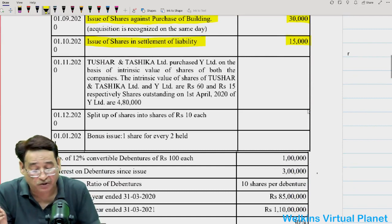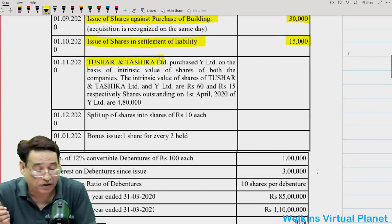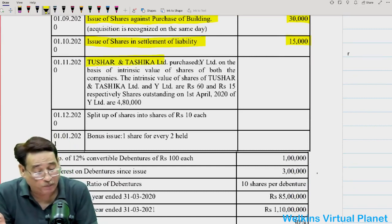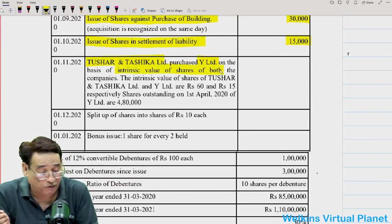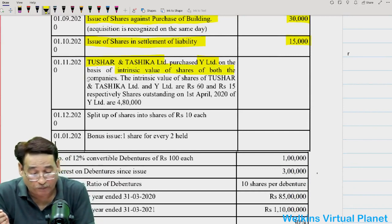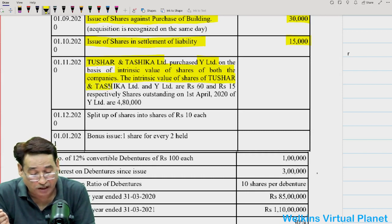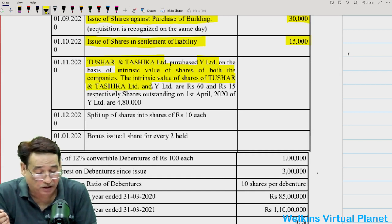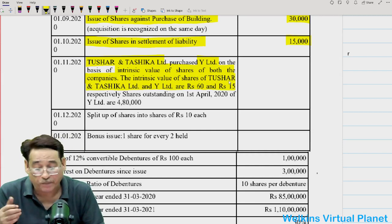Tushar and Tashika Limited acquired Y Limited on the basis of intrinsic value of shares of both companies. The intrinsic value of Tushar and Tashika Limited's share is ₹60 and of Y Limited is ₹50.